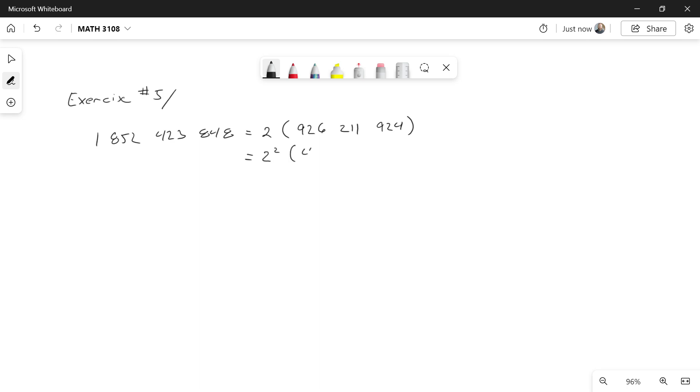And what's remaining here is 463,105,962. And again, still even. I could factor out another 2. So this is now 2 to the 3. And what do I have left? I have 231,552,981.